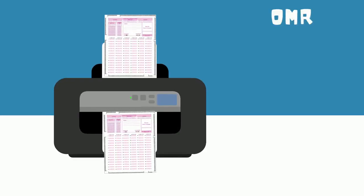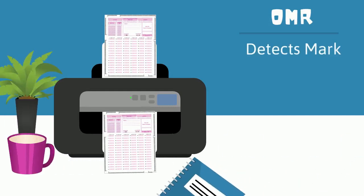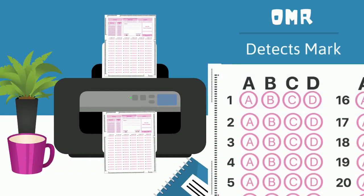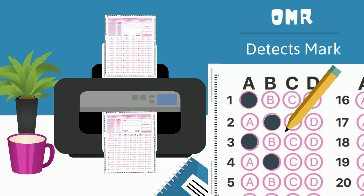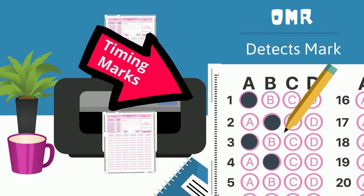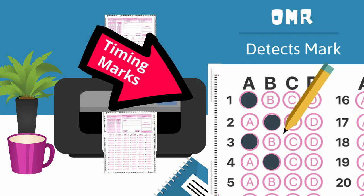OMR technology detects the absence or presence of a mark. It is the fastest data collection technology in the industry, measuring the darkness of a mark to determine whether the mark is a valid response or an erasure. It must include precise timing marks along the edge of the form to let the OMR scanner know where to look for data.